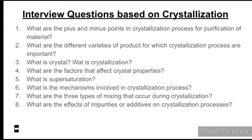The next question is: what are the different varieties of products for which crystallization processes are important? There are a few product types like agrochemicals, catalysts, drying pigments, electronics, food, food health products, nanomaterials, nuclear fuels, personal products, and pharmaceuticals. These are the varieties of products for which crystallization processes are very important.